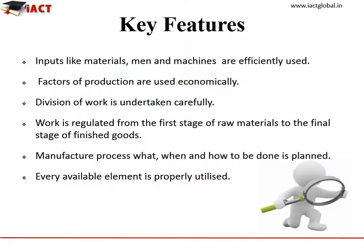The key features of Production Planning and Control are: inputs like materials, men and machines are efficiently used. Factors of production are used economically. Division of work is undertaken carefully. Work is regulated from the first stage of raw materials to the final stage of finished goods.